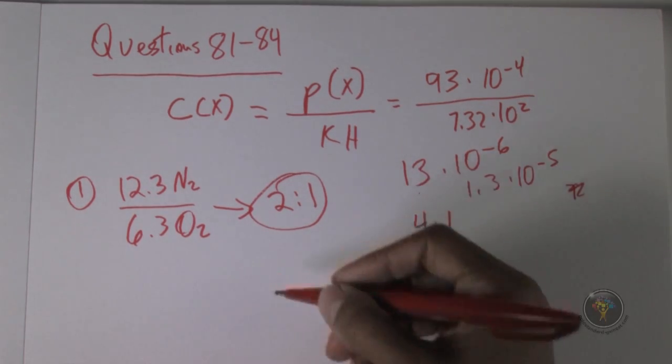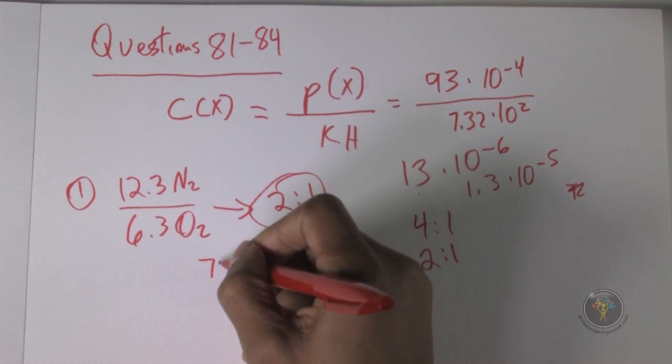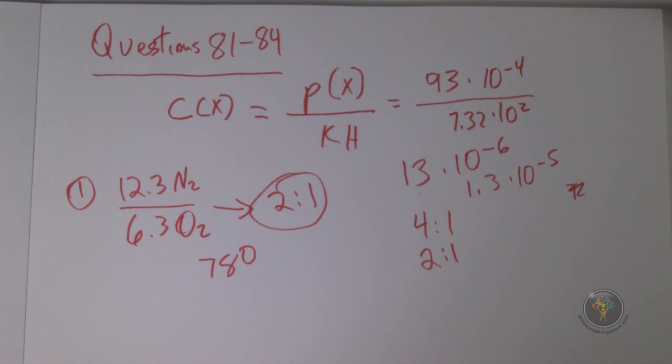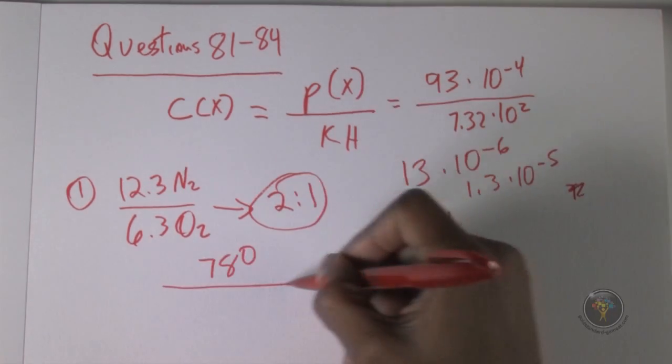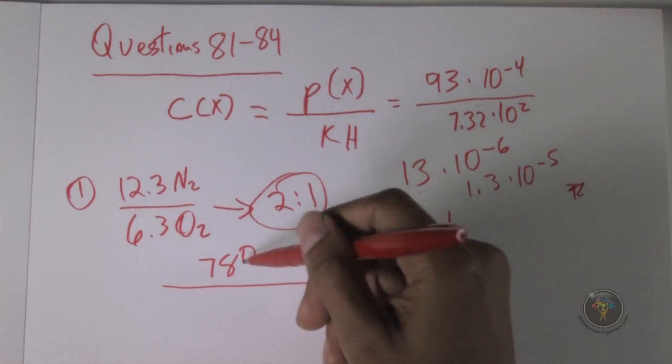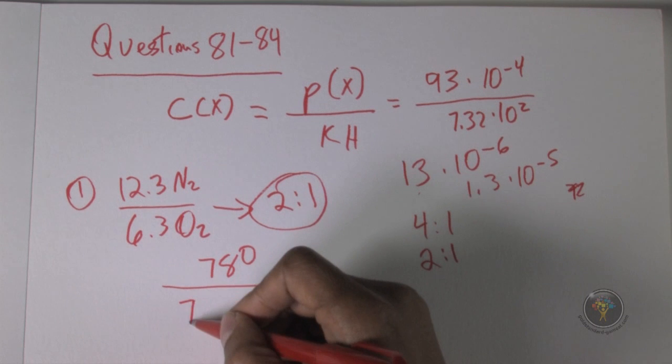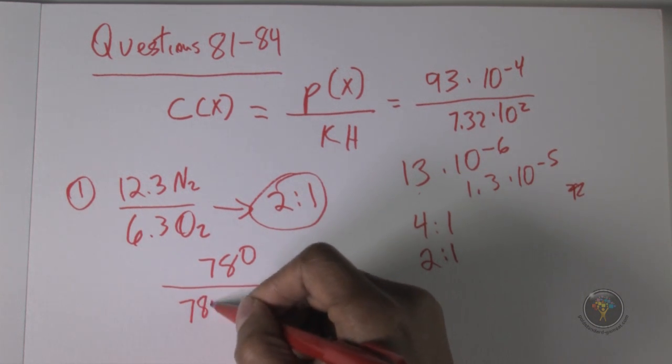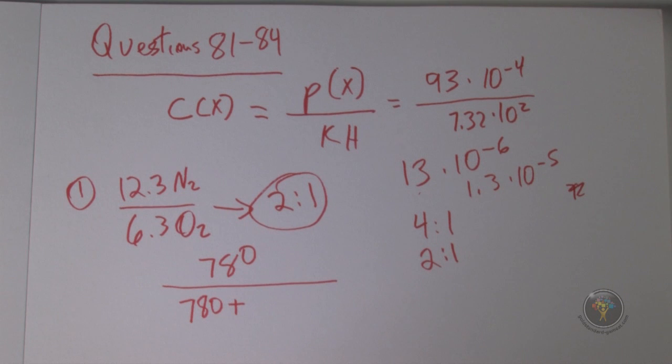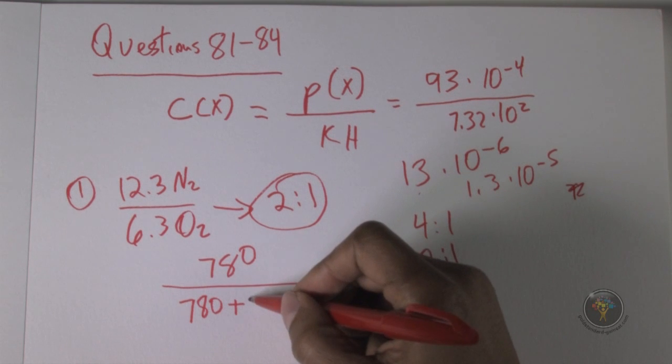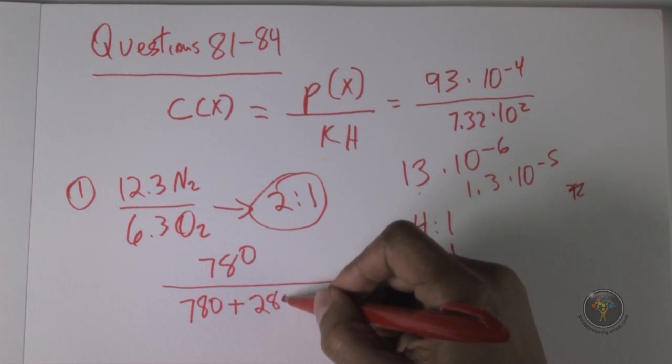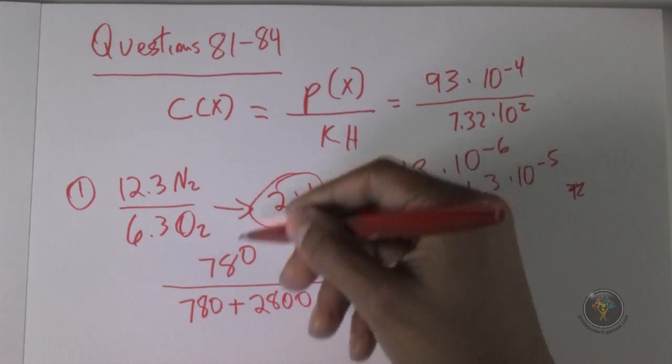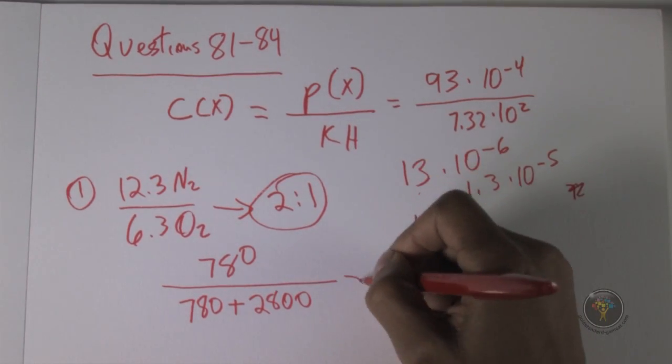Let's do oxygen. We know that oxygen has a concentration in blood plasma of 780. Now we have to find the fraction of what this is. We have to take the total amount, which is 780 plus that for helium, and this information is also given, which is 2800. So this is at the top of the page.